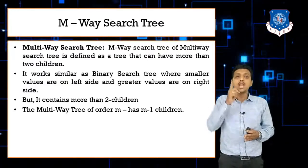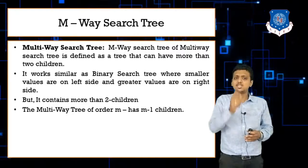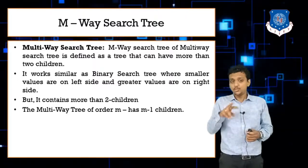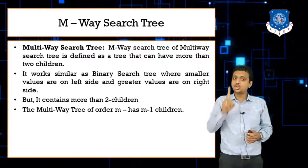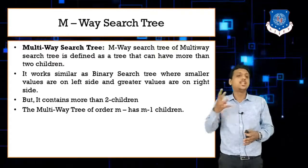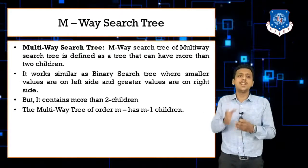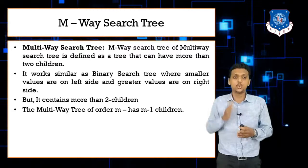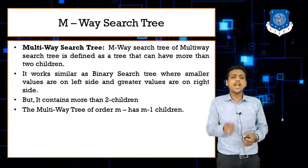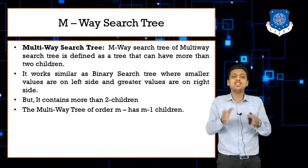In a binary search tree, order is two and each node contains only one value. So if order is two, we store one value; if order is three, we store two values; if order is four, we store three values. For a tree of order m, we can store m minus one values in each node.